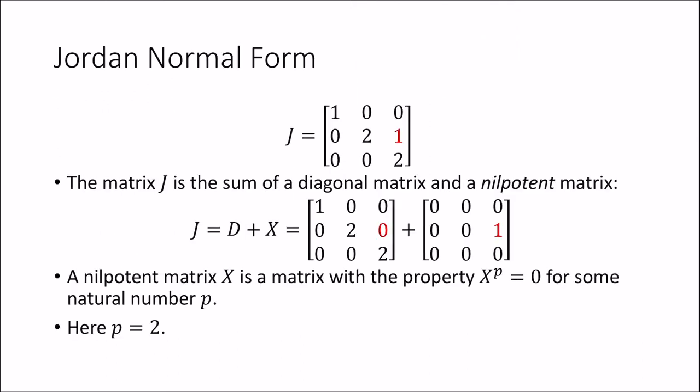The nice thing about Jordan normal form is that it can be written as the sum of two matrices. One is a diagonal matrix D here, and another is x. X is a nilpotent matrix. It has a nice property that when we multiply it with itself for several times, we eventually get 0. So here the value p happens to equal 2, it means x.x equals 0. This is the 0 matrix.